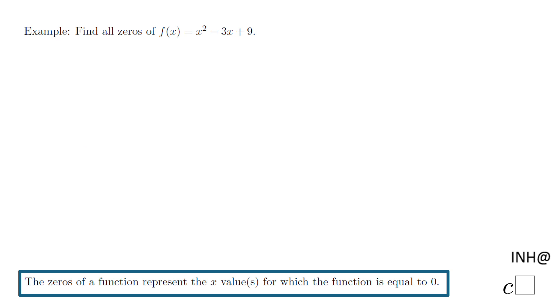Welcome or welcome back. I need help at C squared. In this example, we need to find the zeros of a function. This is a quadratic function f(x) = x² - 3x + 9.